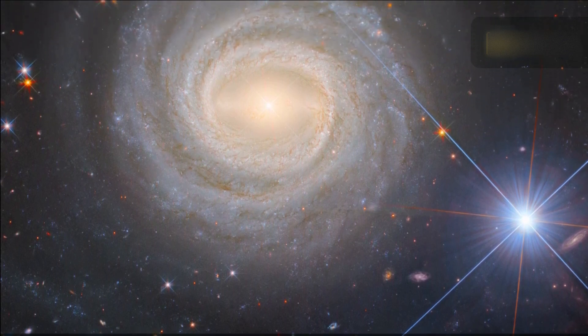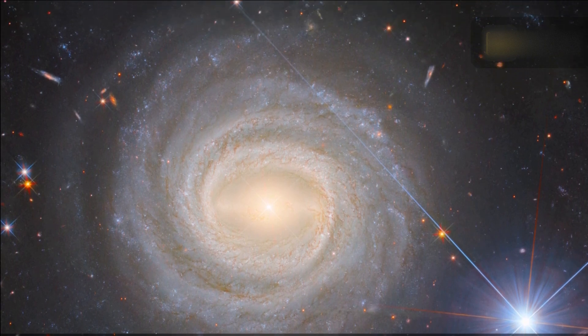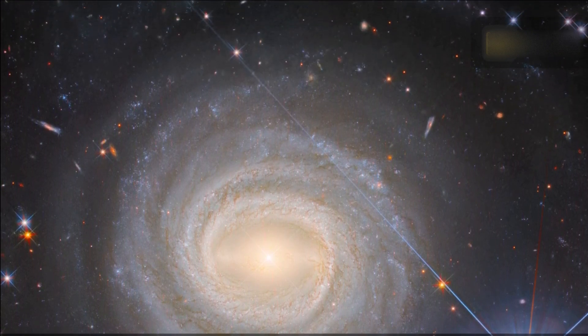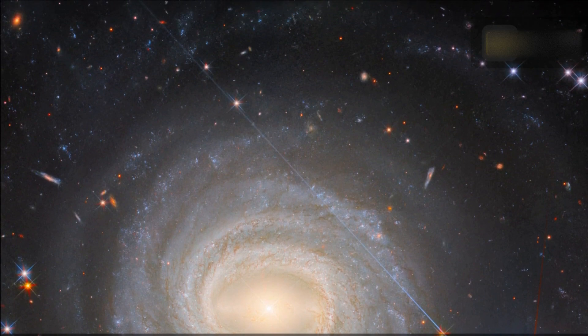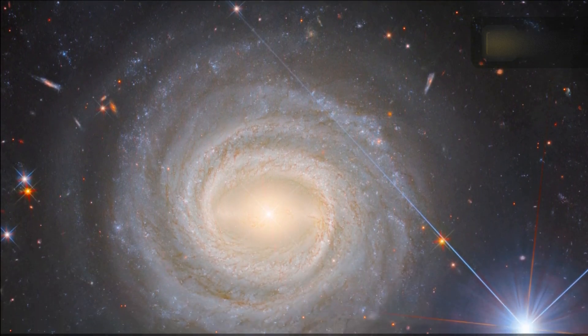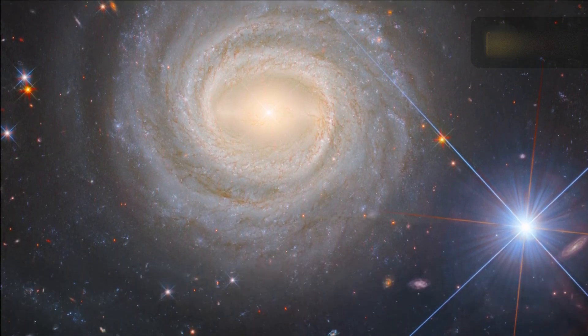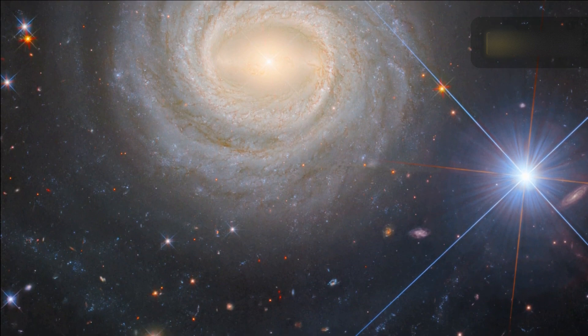Like galaxy clusters, galaxy groups are aggregates of gravitationally bound galaxies. Galaxy groups, however, are less massive and contain fewer members than galaxy clusters do. Where galaxy clusters can contain hundreds or even thousands of constituent galaxies, galaxy groups do not typically include more than 50.